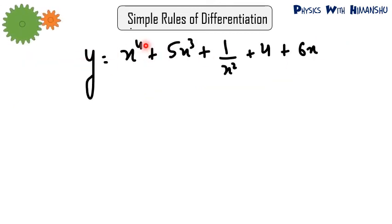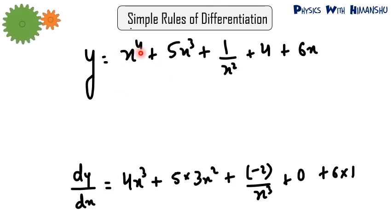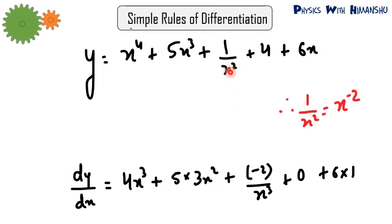Now a combined example: y equals x to the power 4 plus 5x cubed plus 1 by x squared plus 4 plus 6x. Differentiate every term separately and add: x⁴ gives 4x³; 5x³ gives 15x²; 1 by x² equals x to power minus 2, so it gives minus 2x to power minus 3, which is minus 2 upon x cubed; 4 is a constant so its differentiation is 0; and 6x gives 6. So dy by dx equals 4x³ plus 15x² minus 2 upon x cubed plus 6.